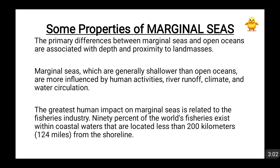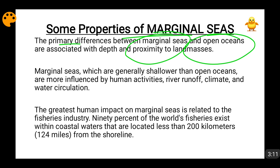Now we are going to see some properties of marginal seas. The most basic difference between open oceans and marginal seas is their depth and their proximity to land masses. Marginal seas are near to land masses — they are surrounded or partially enclosed by land. Because they are near to land, their depth is comparatively less than the open ocean. So marginal seas are shallower than open oceans.